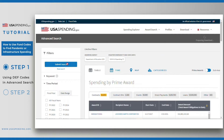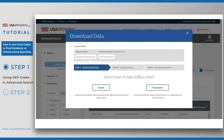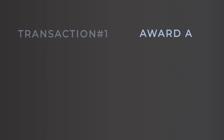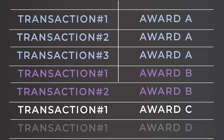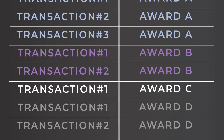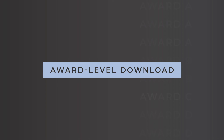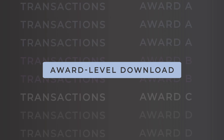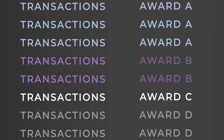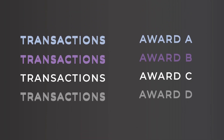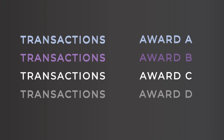Once you have narrowed your search, make sure you choose the award level download. For your awareness, the transaction file will give you a separate row for each transaction of an award, and each award may have multiple transactions in your file. In contrast, the award level download will give you files where each row summarizes a single award with all information from the individual transactions that make up that award rolled up into that single row.